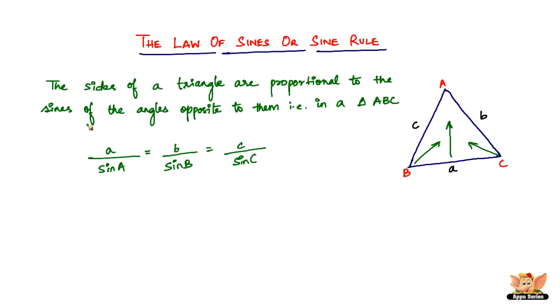So the sides of a triangle are proportional to the sines of the angles opposite to them. That's exactly what this means - this is the formula. How are you going to use this? It's pretty simple. If you've got two angles and a side, and you want to measure the length of another side, you can use this.